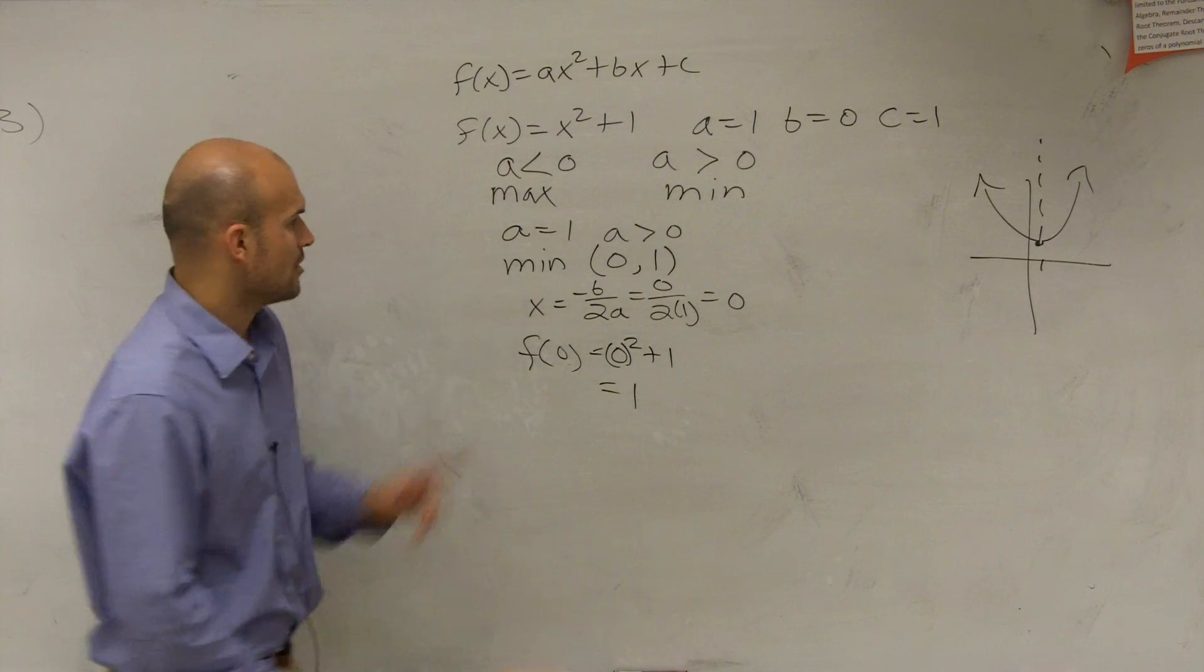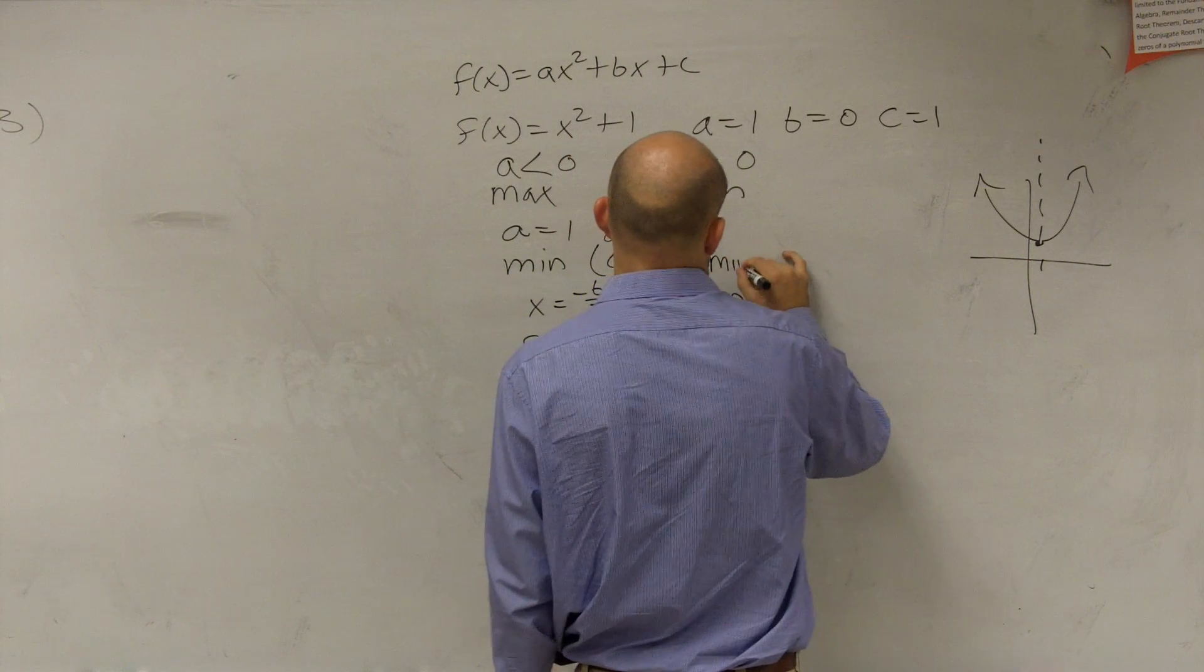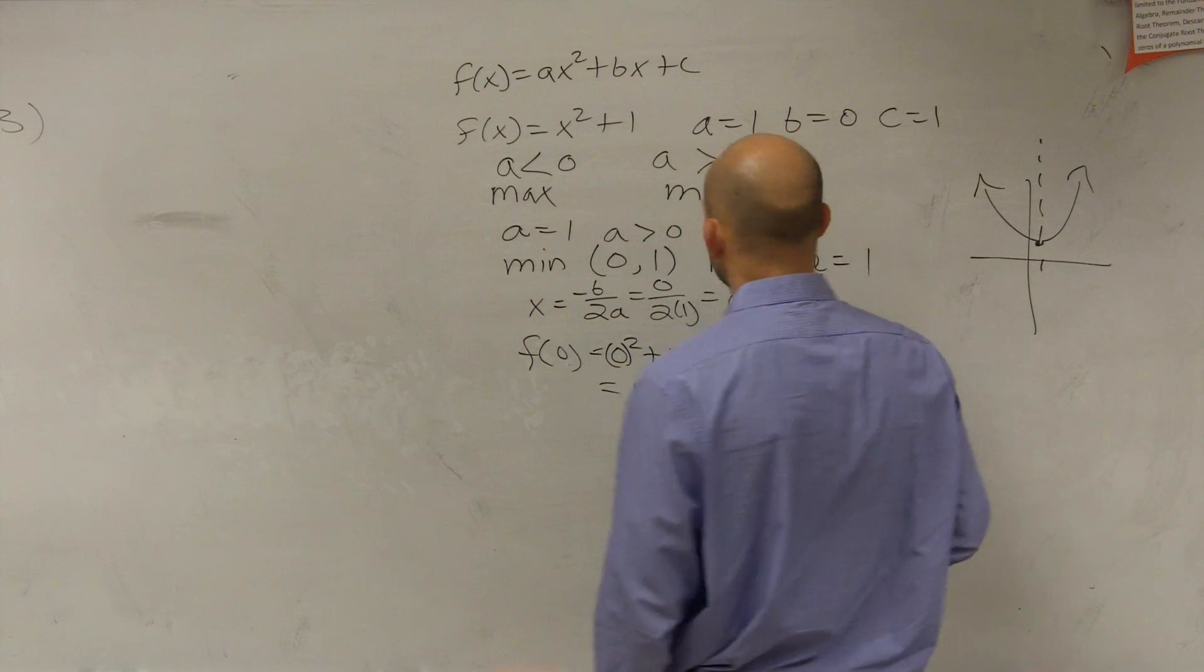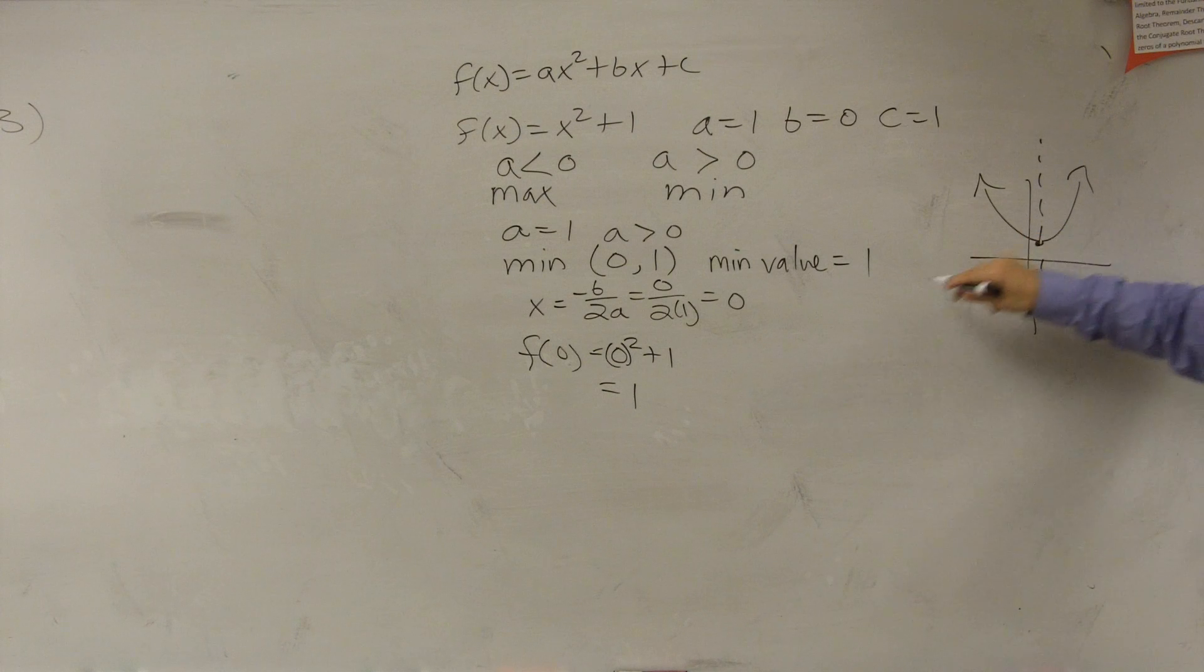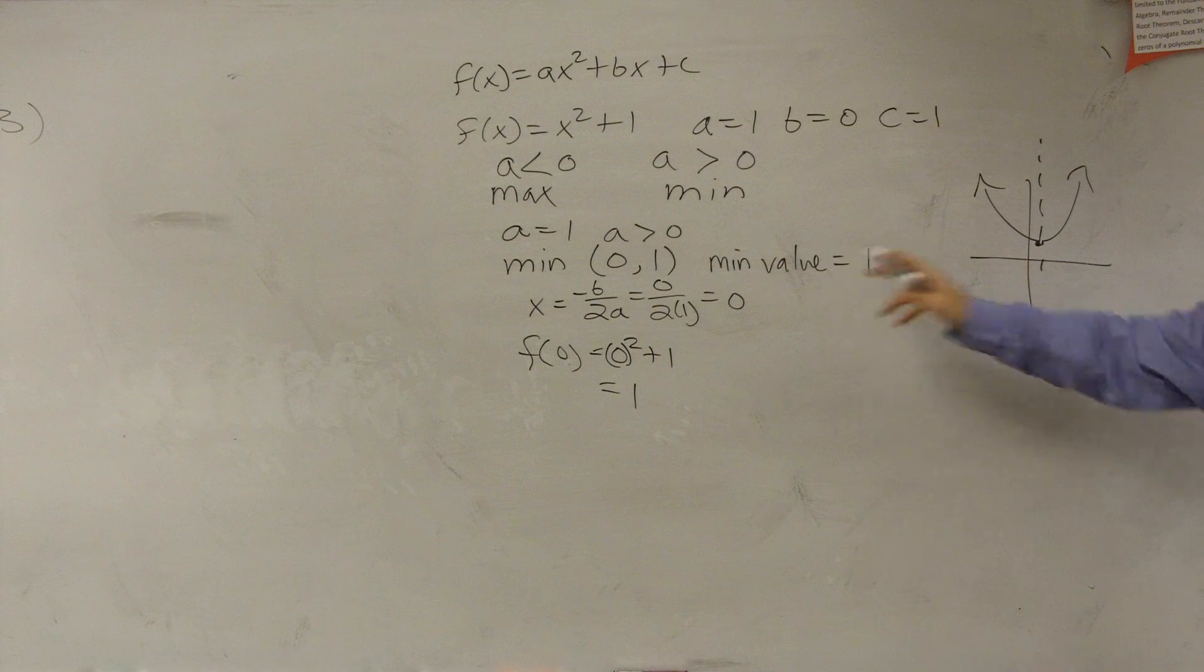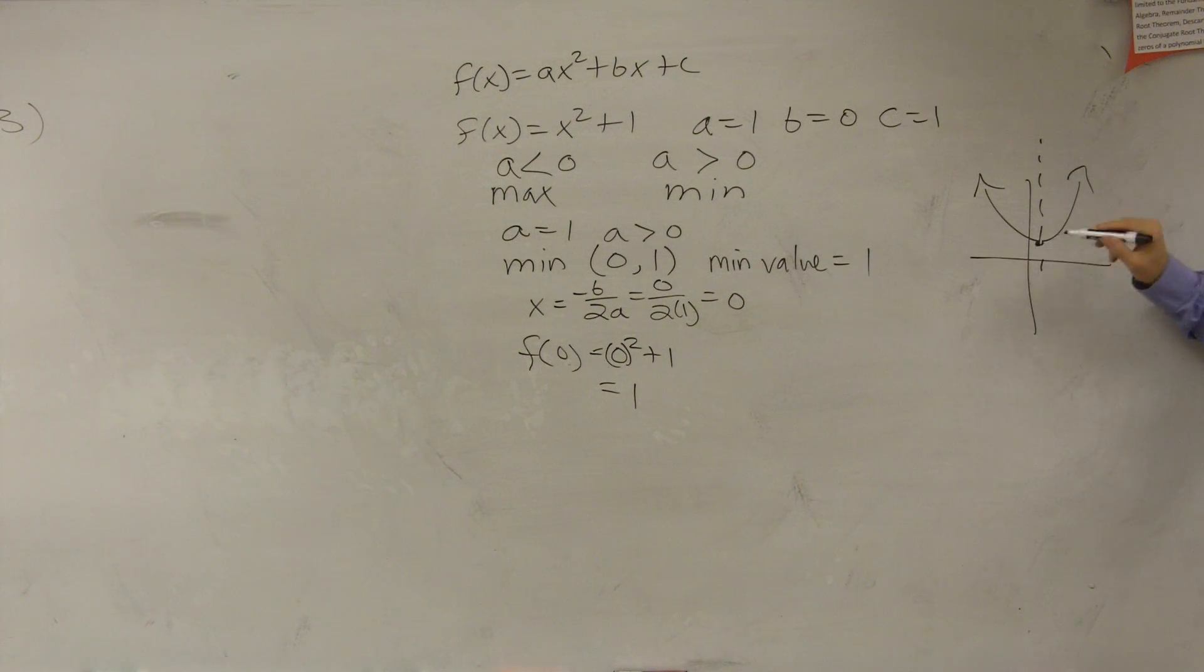So therefore, my minimum value is equal to 1. That means the smallest value of my graph is equal to 1. The x value is at 0, but the output value, the minimum value of it, is at 1.